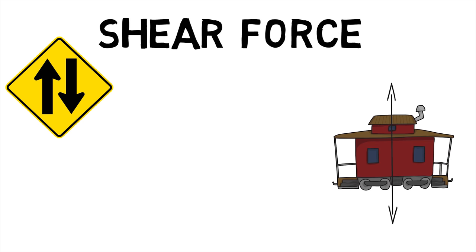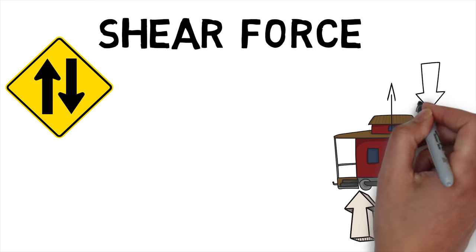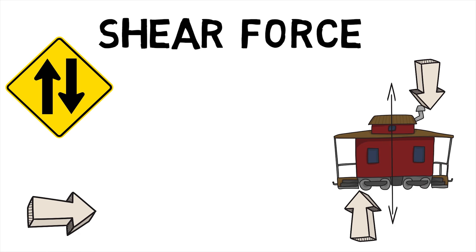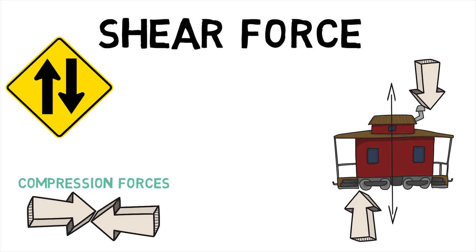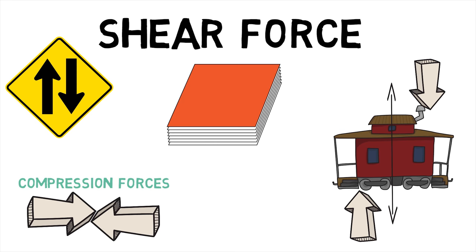Shearing forces are unaligned forces pushing one part of a body in one specific direction and another part of the body in the opposite direction. When the forces are aligned into each other, they are called compression forces. An example is a deck of cards being pushed one way on the top and the other at the bottom, causing the cards to slide.